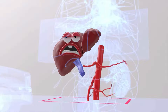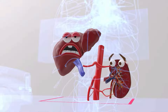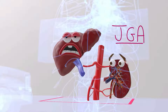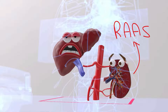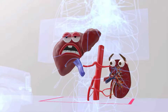Which organ picks up on this decreased systemic vascular resistance? The kidneys! Here we have one of them. The kidney, and specifically the juxtaglomerular apparatus, recognizes that there's reduced perfusion — that is, reduced effective circulating volume. And what does the kidney do in response to that? It activates the RAS system, the renin-angiotensin-aldosterone system.